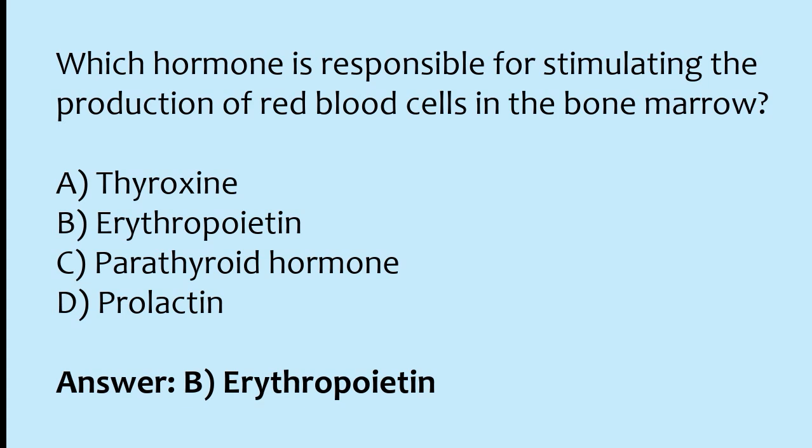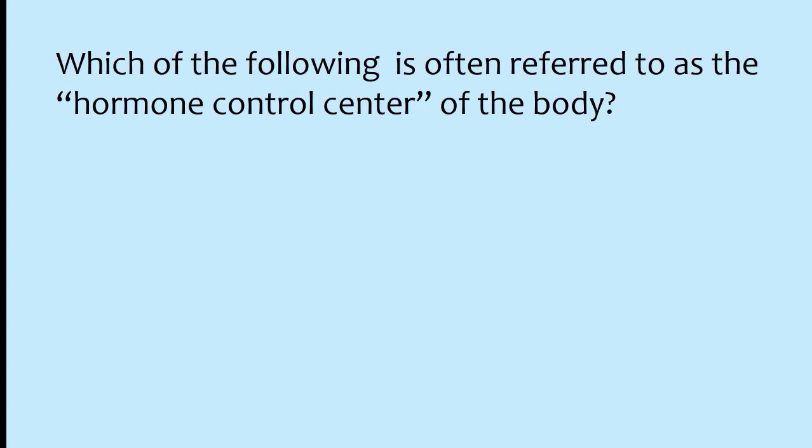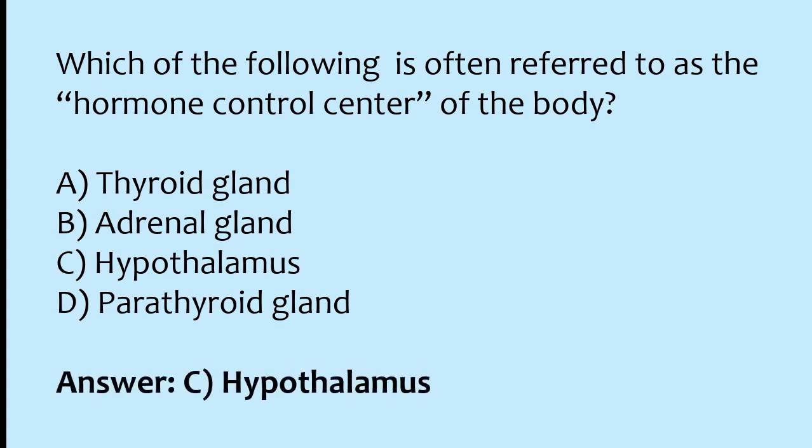Which of the following is often referred to as the hormone control center of the body? Options: thyroid gland, adrenal gland, hypothalamus, parathyroid gland. The correct answer is option C: the hypothalamus is often referred to as the hormone control center of the body.